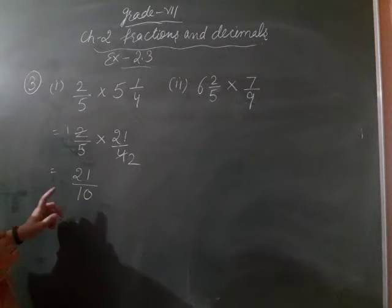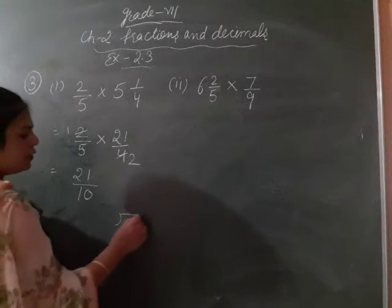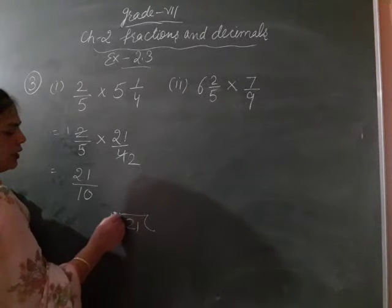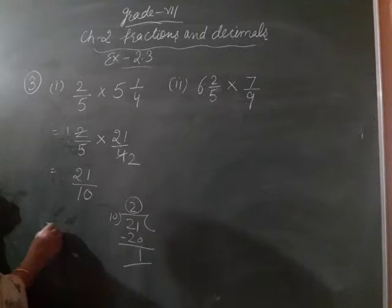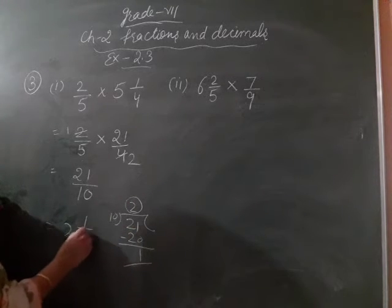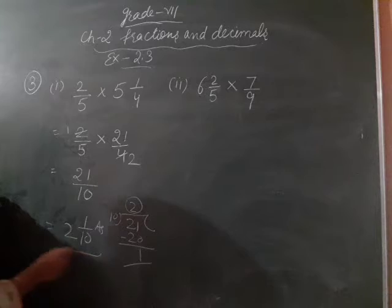This is improper fraction, toh convert into the mixed fraction. 10, 2's are 21. So kitta ban ki hai maara quotient, remainder and divisor. This is our answer, clear?